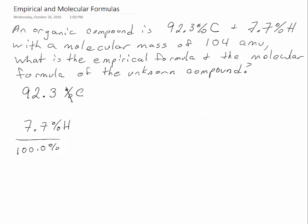We can assume that we have 100 grams of this sample, which means that those percents change to grams. So in our sample, which we're assuming is 100 grams, 92.3 grams are carbon and 7.7 grams are hydrogen.